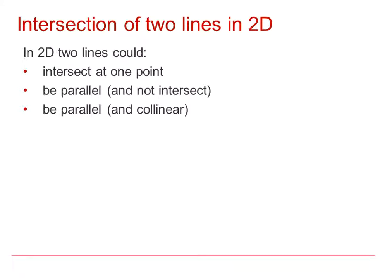If we are looking at two-dimensional lines, these lines could intersect at a single point. The lines could be parallel and do not intersect at all, or they could be parallel and collinear. That means that they are the same straight line.